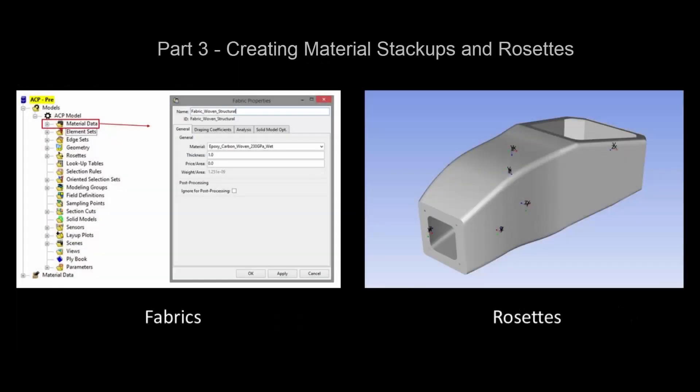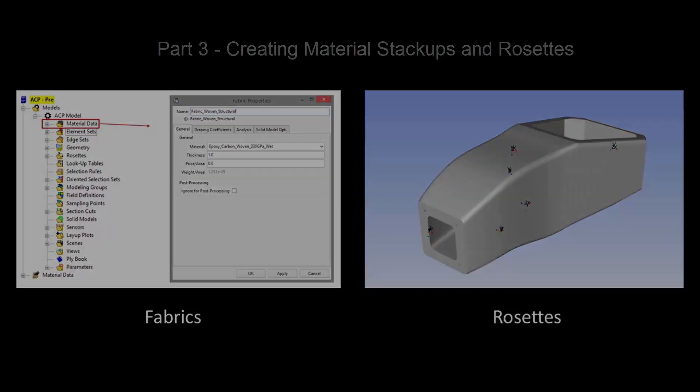In Part 3, fabrics are created from the defined materials along with rosettes for the different parts of the chassis.